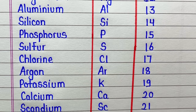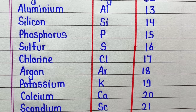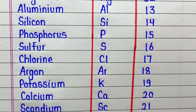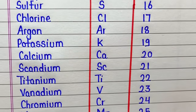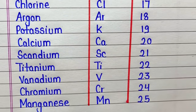Chlorine, symbol is Cl, atomic number is 17. Argon, symbol is Ar, atomic number is 18. Potassium, symbol is K, atomic number is 19. Calcium, symbol is Ca, atomic number is 20.